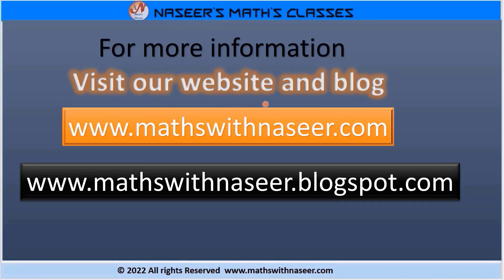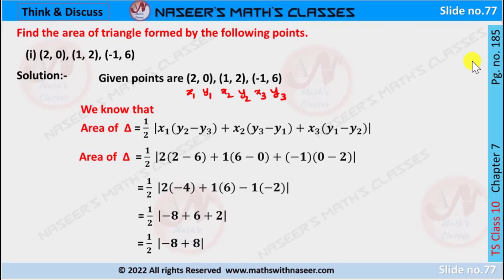For more information visit our website and blog at mathswithnaseer.com. We discuss page number 185, chapter 7: coordinate geometry — find the area of the triangle formed by the following points: (2, 0), (1, 2), and (−1, 6). These are the three points given, so the coordinates are: x1 is 2, y1 is 0.